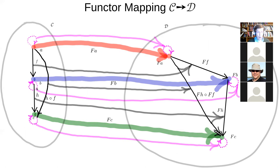A functor consists of a mapping from objects in C to objects in D, and from morphisms in C to morphisms in D, but in a very well-behaved way. If we have two objects in C and a morphism between them, the morphism in the target category D has to go between where A is mapped to and where B is mapped to. So if we have A and B and a morphism F between them, we get F(A) and F(B) as their mappings, and the image of F goes between F(A) and F(B).